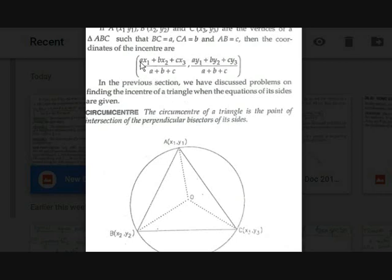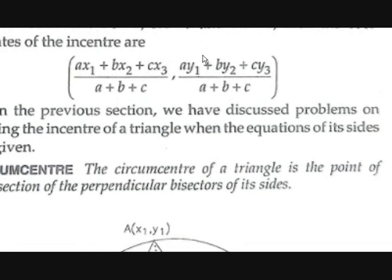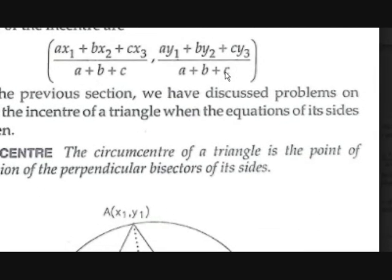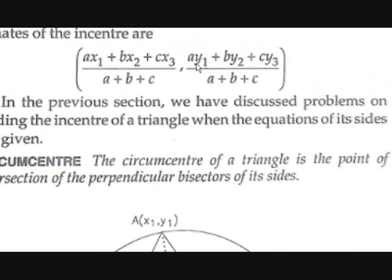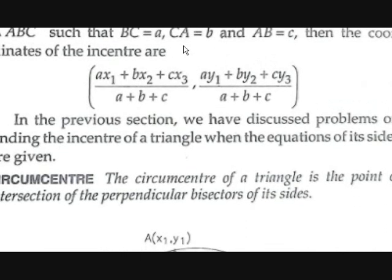The coordinates of the incenter: if the coordinates of the triangle are A(X1, Y1), B(X2, Y2), and C(X3, Y3), and the lengths BC, CA, and AB are a, b, and c respectively, then the coordinates of the incenter are ((a·X1 + b·X2 + c·X3) / (a + b + c), (a·Y1 + b·Y2 + c·Y3) / (a + b + c)), where a is the length of the side opposite to vertex A, b is the length of the side opposite to vertex B, and c is the length of the side opposite to vertex C.